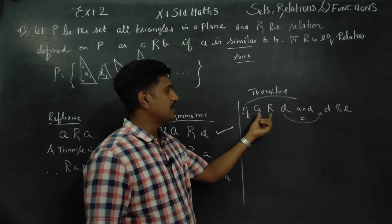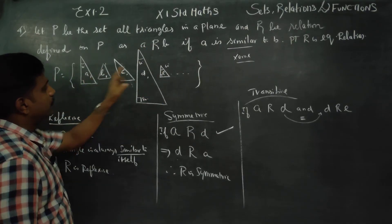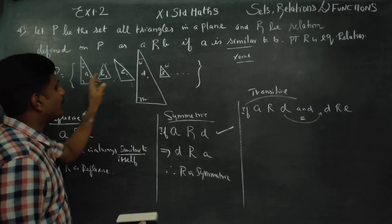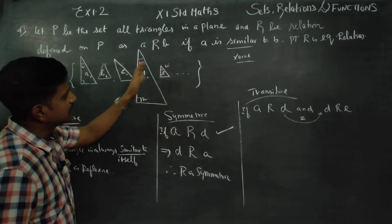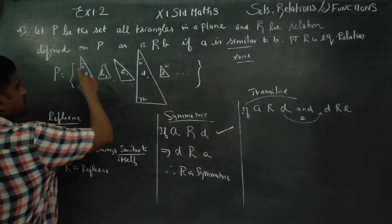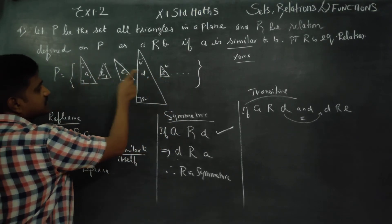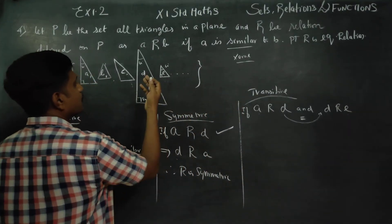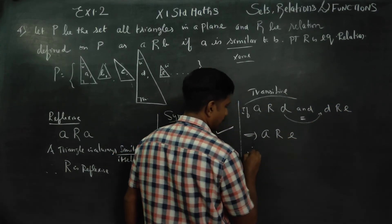A is related to D, A is similar to D. D is similar to E. A is similar to D and D is similar to E — can we conclude A is similar to E? Yes. For example, 90 degree and 60 degree — they are similar triangles. Equiangular triangles are similar triangles. Think of it like a passport photo: this is the parent photo, this is the enlarged size photo, this is the stamp size photo — they are all similar. A is similar to D, D is similar to E, therefore A is similar to E. Therefore R is transitive.